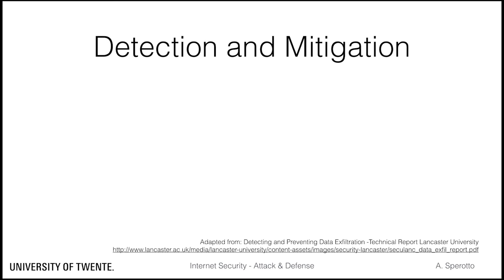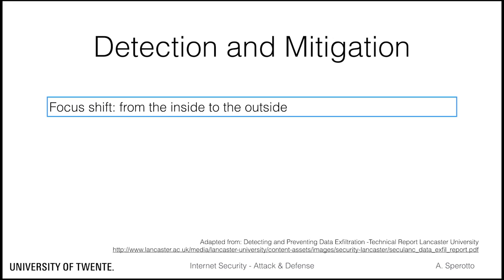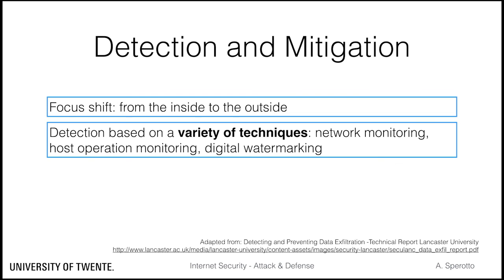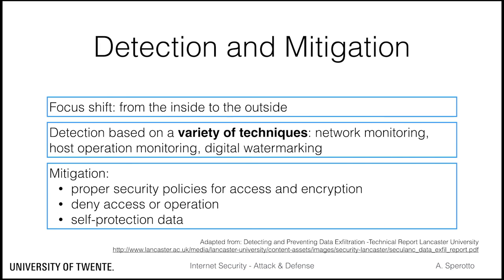As with APTs in general, it can be fairly complex to detect data exfiltration, mostly given the multitude of options an attacker can choose from. Data exfiltration detection is one of the steps that will most benefit from a shift of focus — namely from detection of incoming malicious activity to detection of outgoing malicious activities. A large spectrum of techniques can be applied: network monitoring and host operation monitoring can identify anomalous data flows or hosts performing suspicious operations like frequent encryption and compression of data. Digital watermarking can also help in tracking data for forensic purposes.